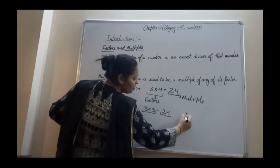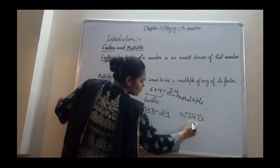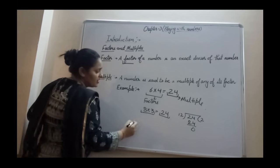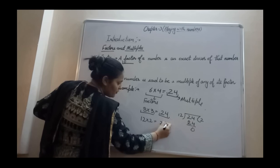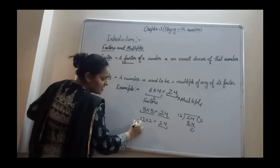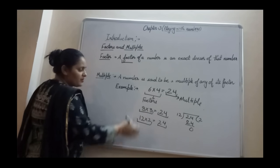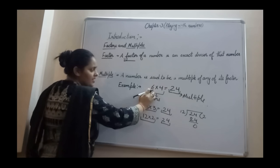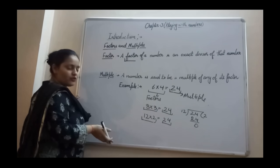When you divide 24 by 12, it goes exactly 2 times and your remainder is 0. So when you multiply 12 by 2 your answer is also 24 — the multiple is the same, that is 24, but the factors are again different: 12 and 2. So from this we can conclude the factors of 24 include 6, 4, 8, 3, 12, and 2.